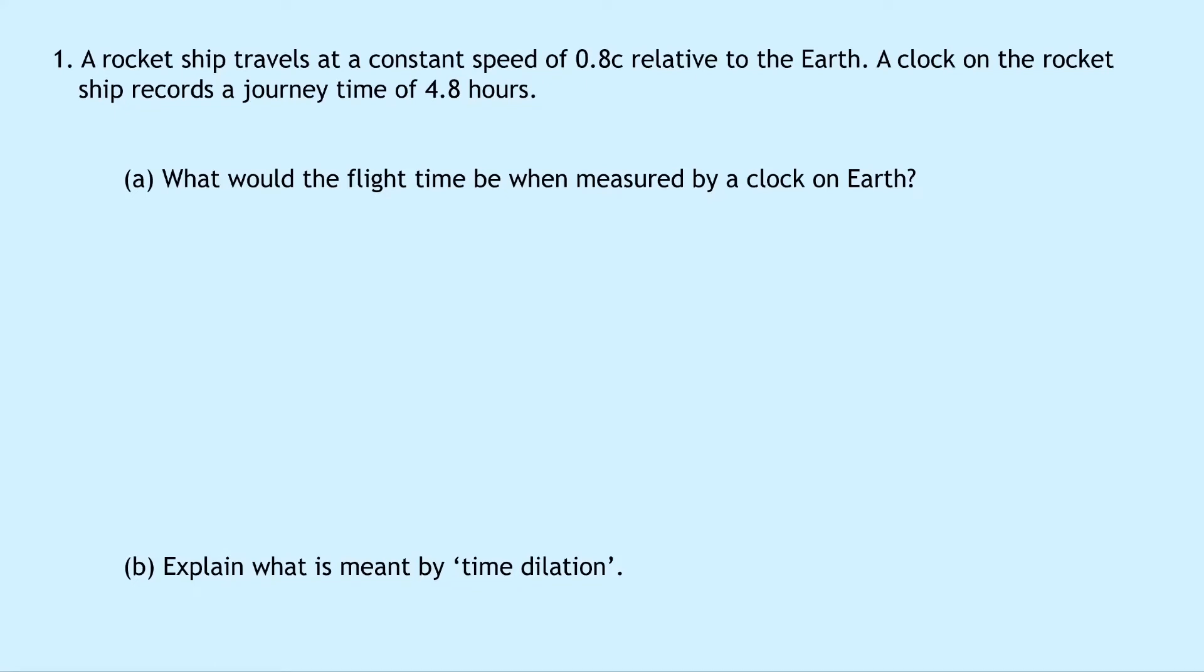So let's get started. Question 1 says that a rocket ship travels at a constant speed of 0.8c, so that's 0.8 times the speed of light relative to the Earth. A clock on the rocket ship records a journey time of 4.8 hours.